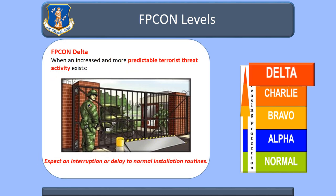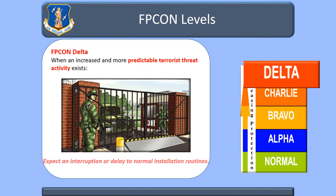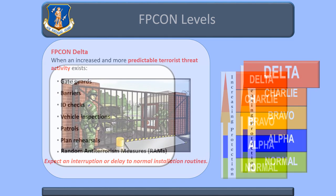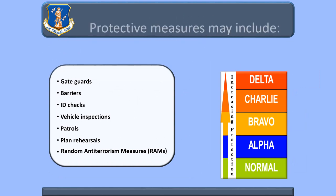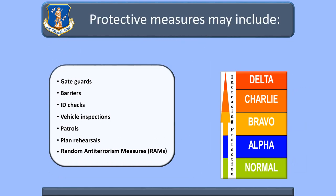FPCON Delta is when a terrorist attack has occurred or there is intelligence indicating a terrorist action against a specific location. You can expect an interruption or delay to normal installation routines. As the threat environment or FPCON changes, you can expect multiple countermeasures to occur to protect the base, to include rams.